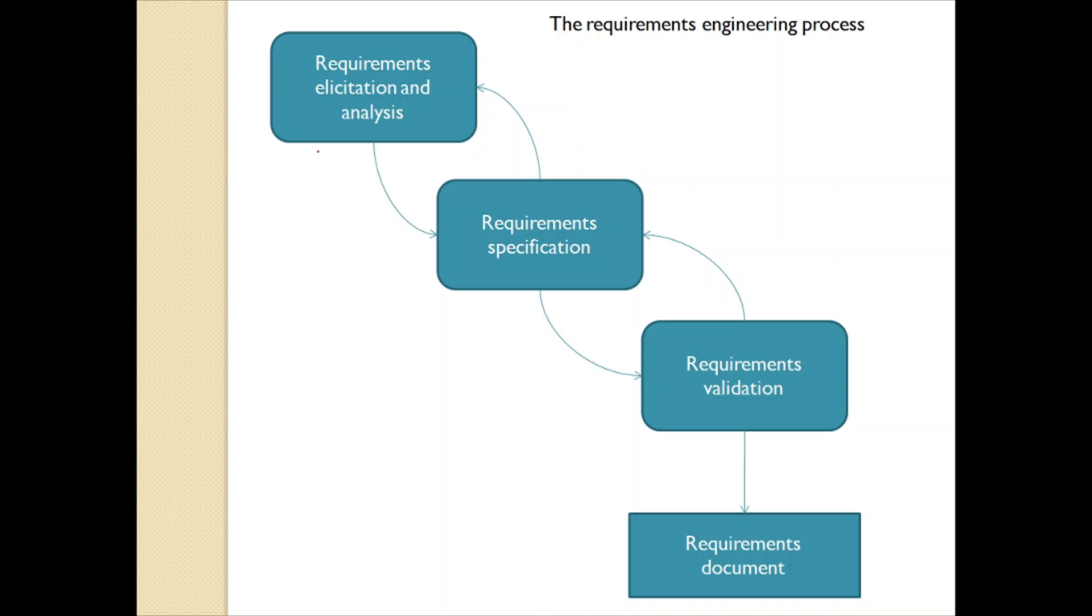If we talk about the output of first phase, requirements elicitation and analysis, we get system description. While here we get user and system requirements. These are again important part of the requirements document which is validated in this phase, requirements validation.